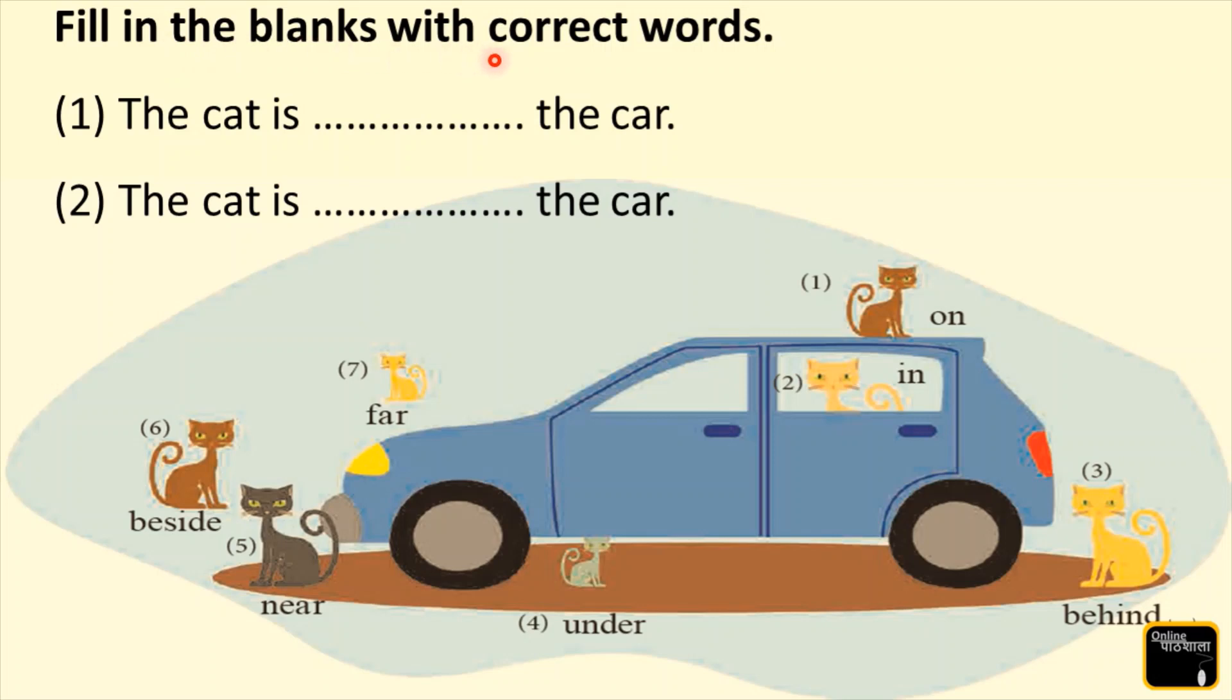Fill in the blanks with correct words. Question number 1: The cat is ___ the car. So kids, tell me where is the number 1 cat? Yes, here it is. The cat is on the car. So we are going to write here 'on'. Yes, the cat is sitting on the car.